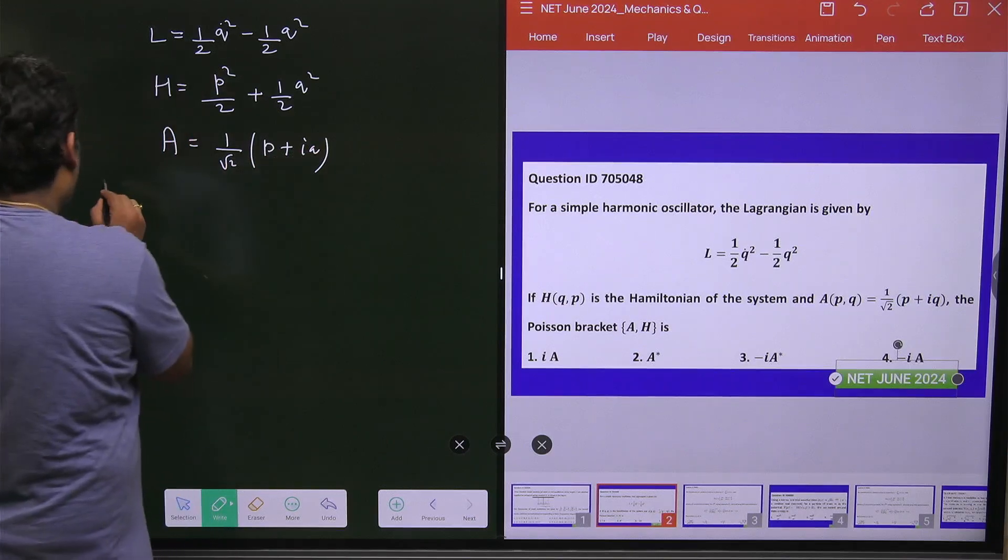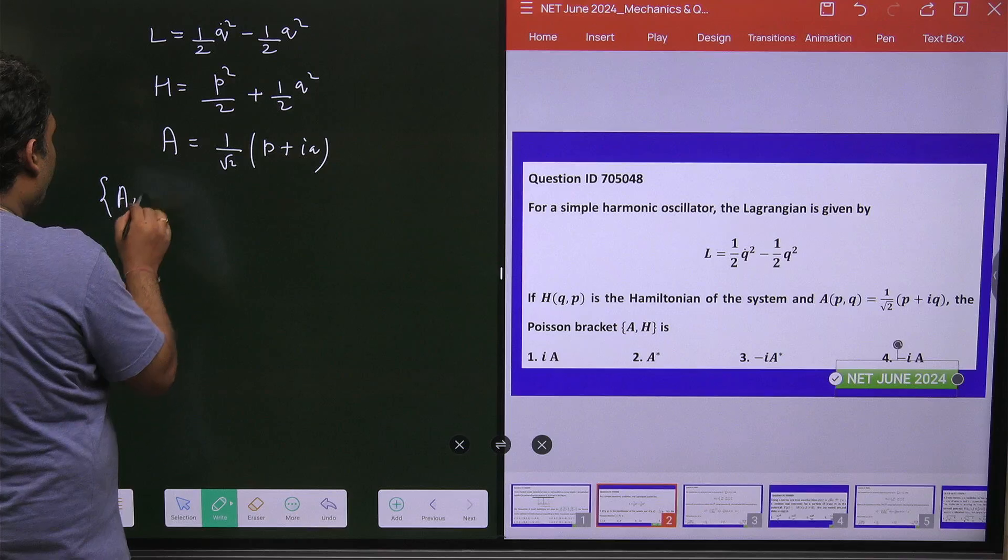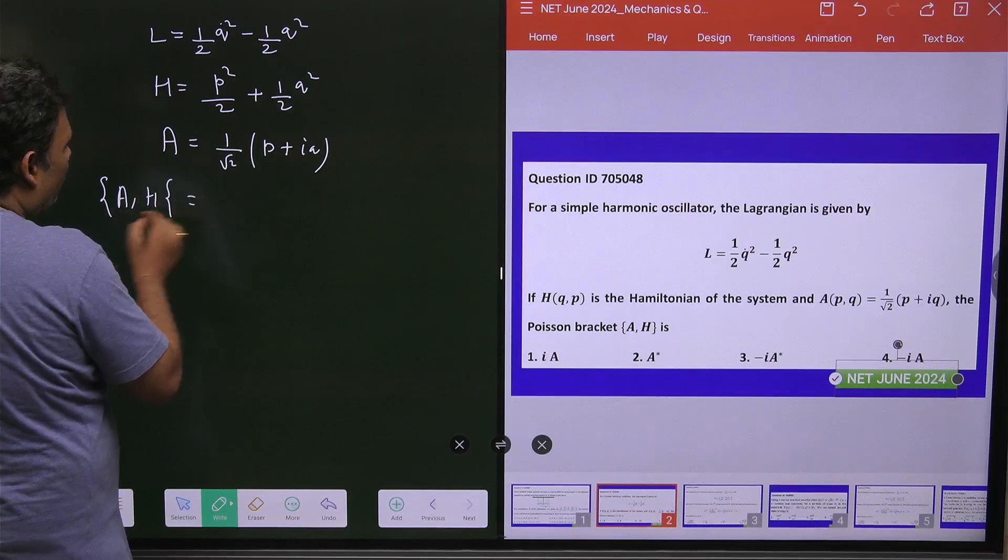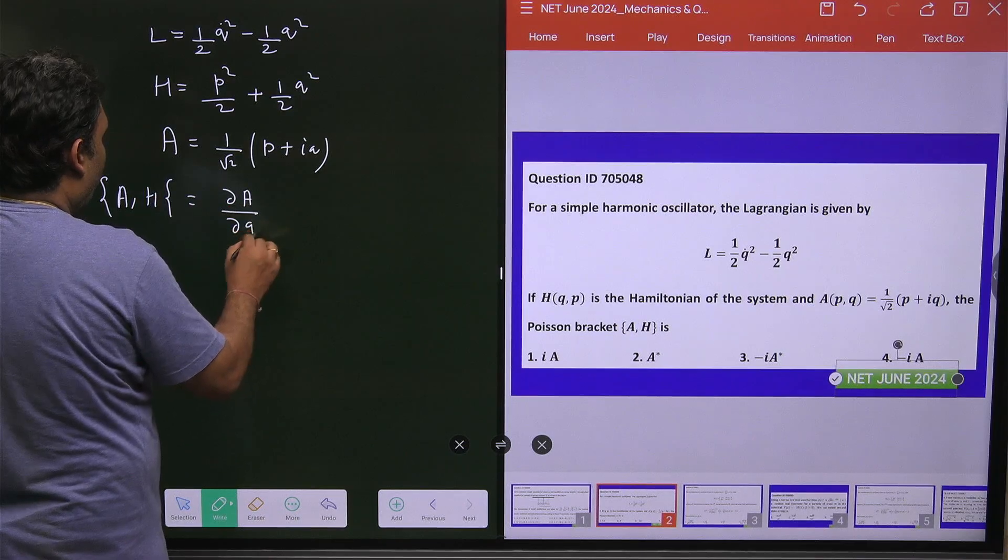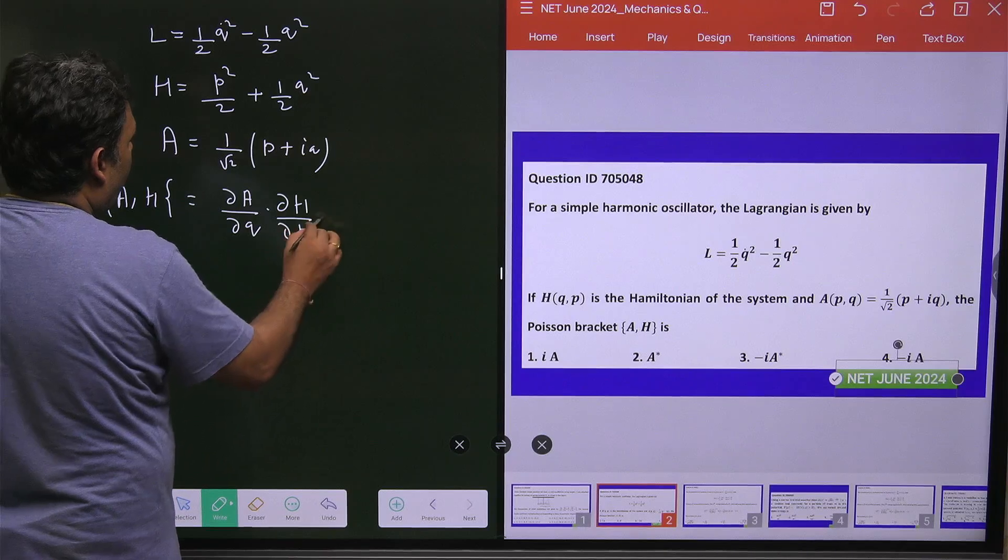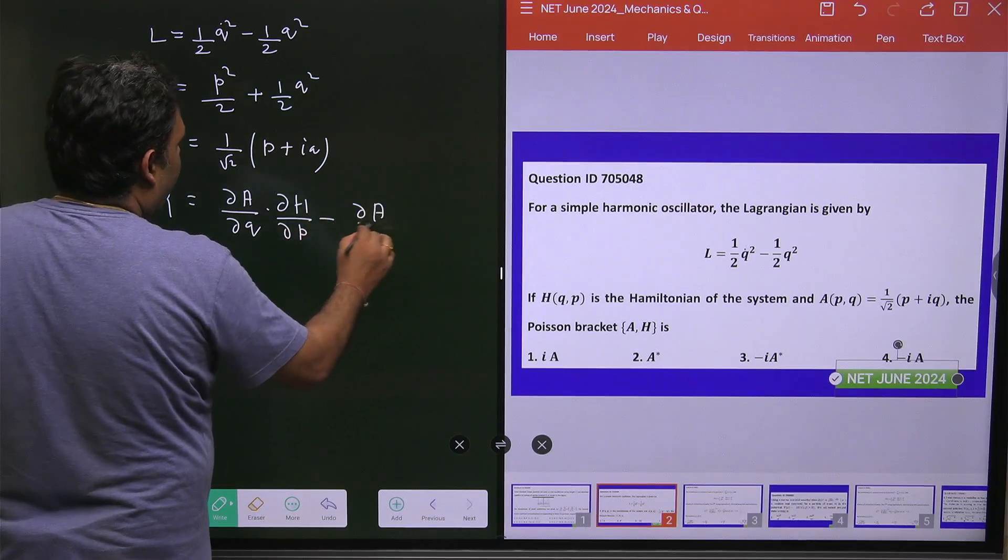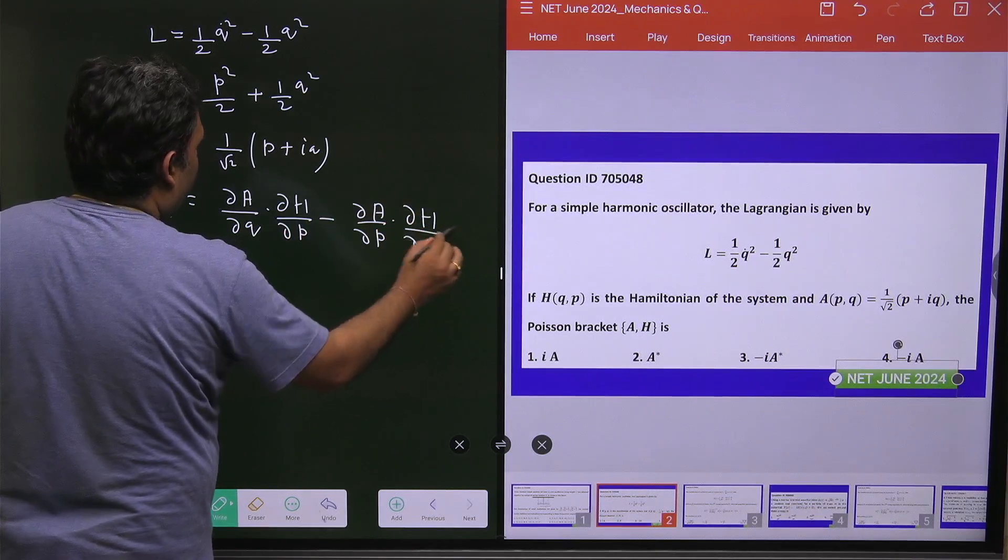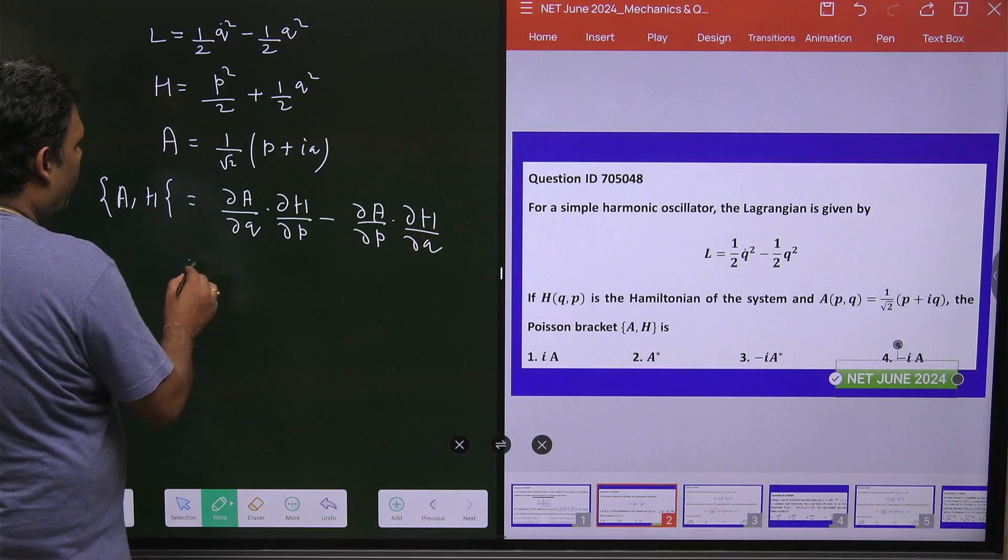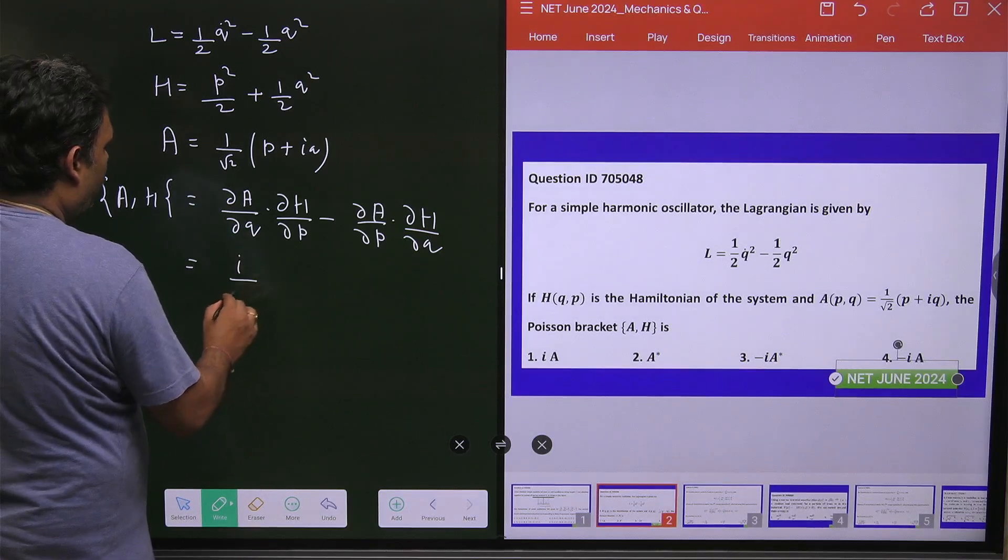What we have to do? We have to calculate the Poisson bracket between A and H. It is very simple. You have to just go to the formula. ∂A/∂q = i/√2.